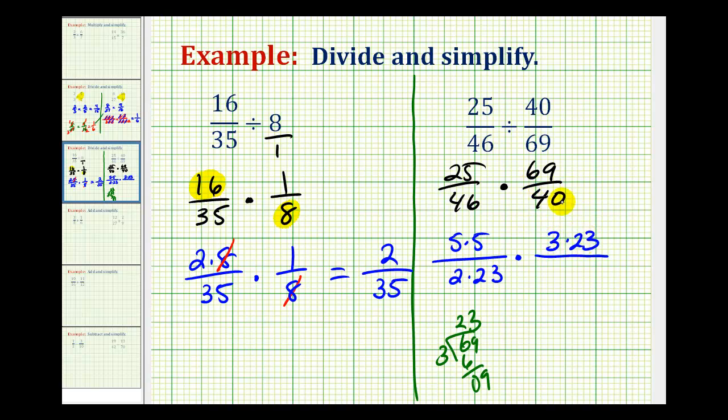And then for the prime factorization of 40, we'd have 8 times 5, 4 times 2, and 2 times 2. So we have 1, 2, 3 factors of 2, and a factor of 5.